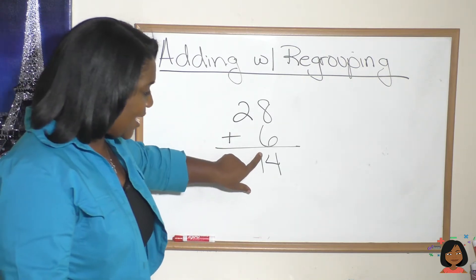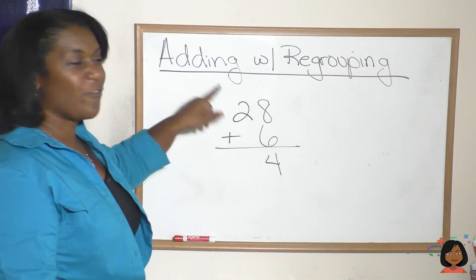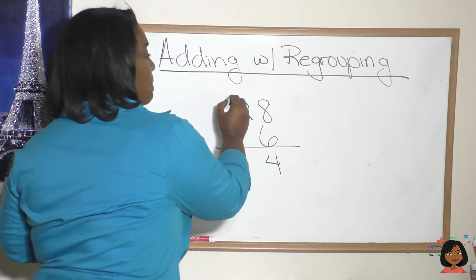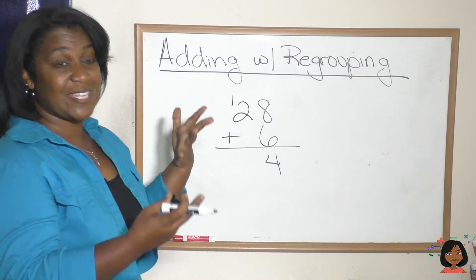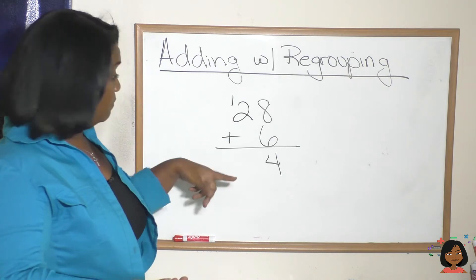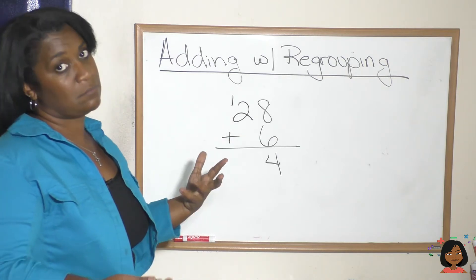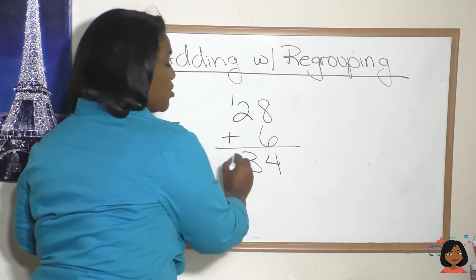It's the same thing as taking this one and bringing it over to the tens place. And now we add the tens. One plus two is three. There's nothing to add here. So our answer is thirty four.